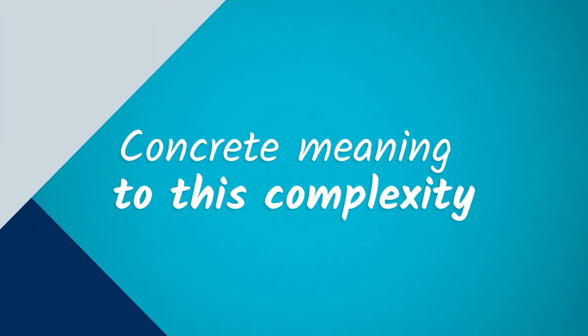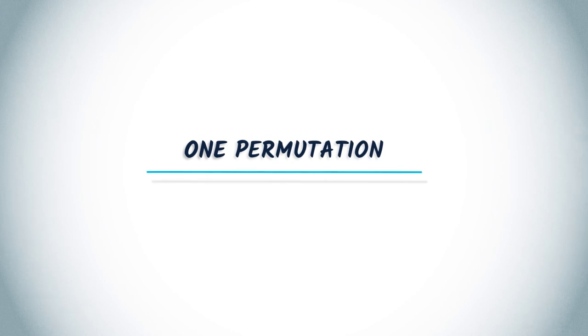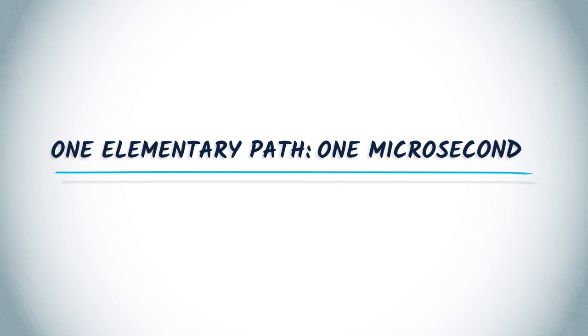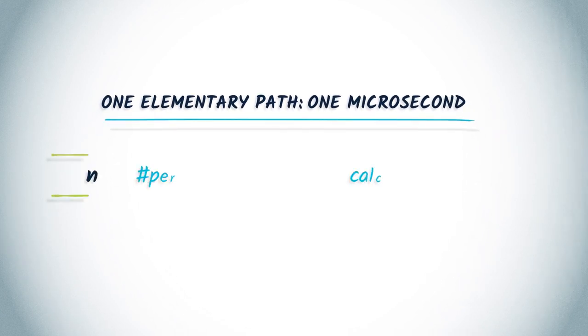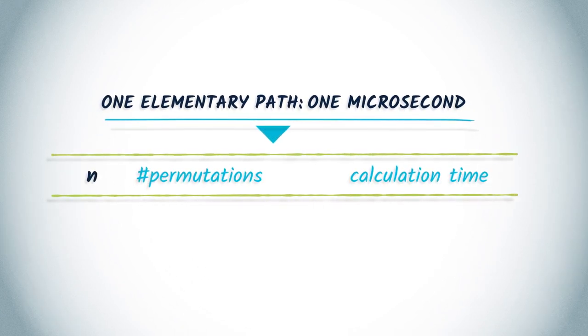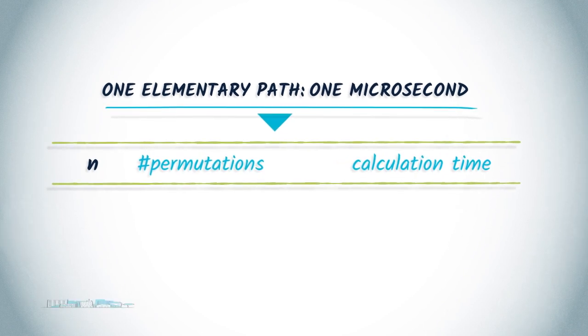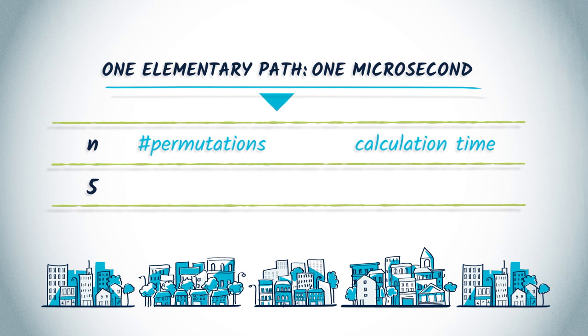To give some more concrete meaning to this complexity, imagine that evaluating one permutation takes one microsecond. The following table summarizes the calculation time when the number of cities increases. For example, for a problem with five cities, the number of possible elementary paths equals 24, and the calculation time will be 24 microseconds.